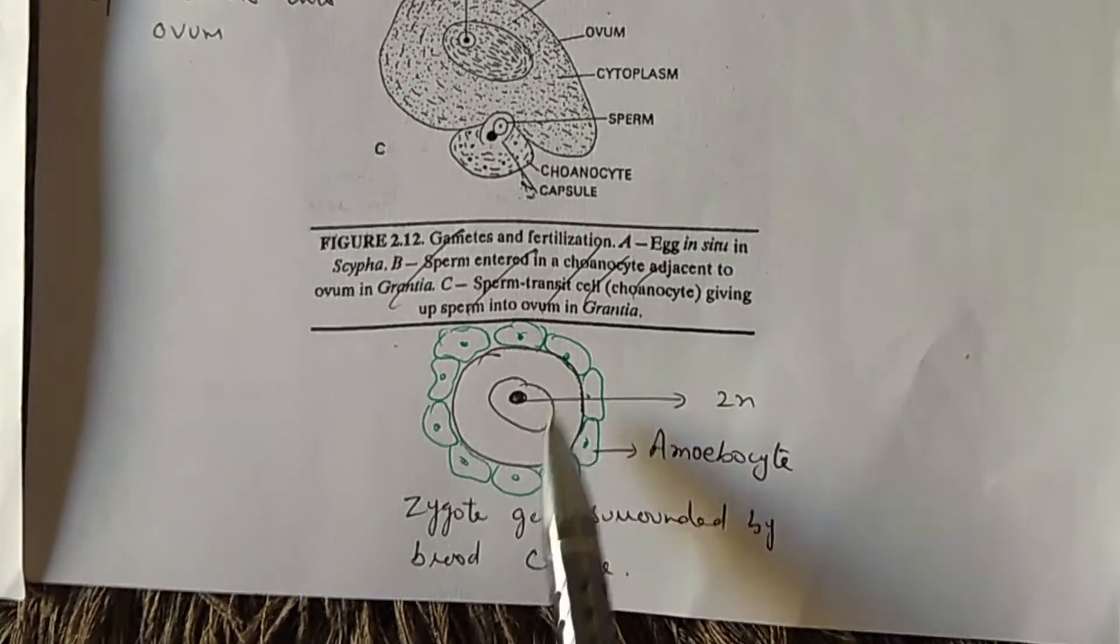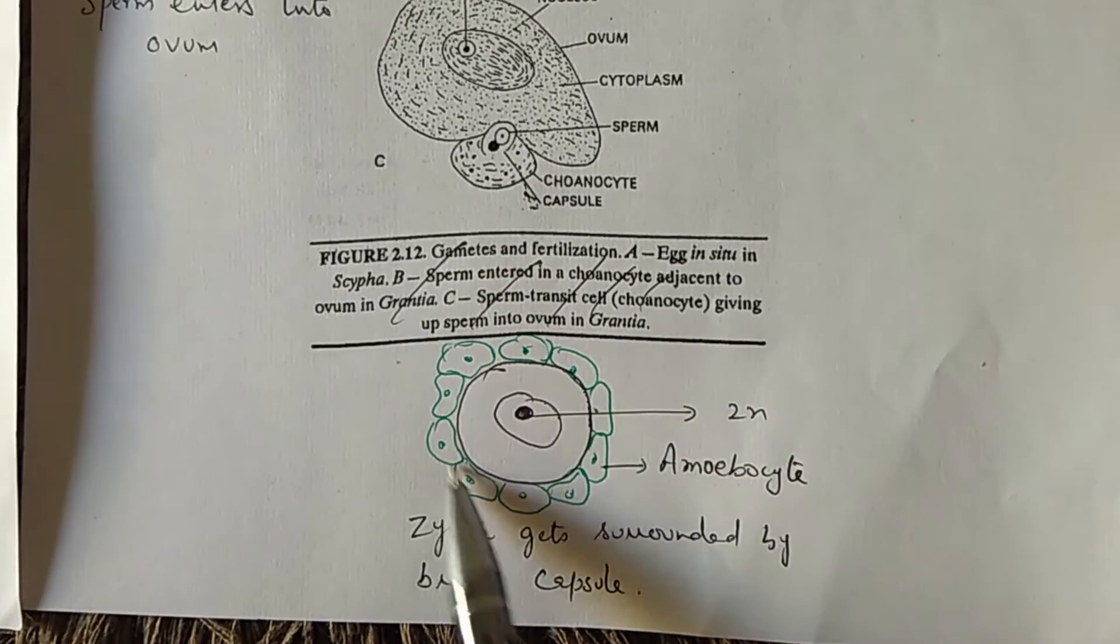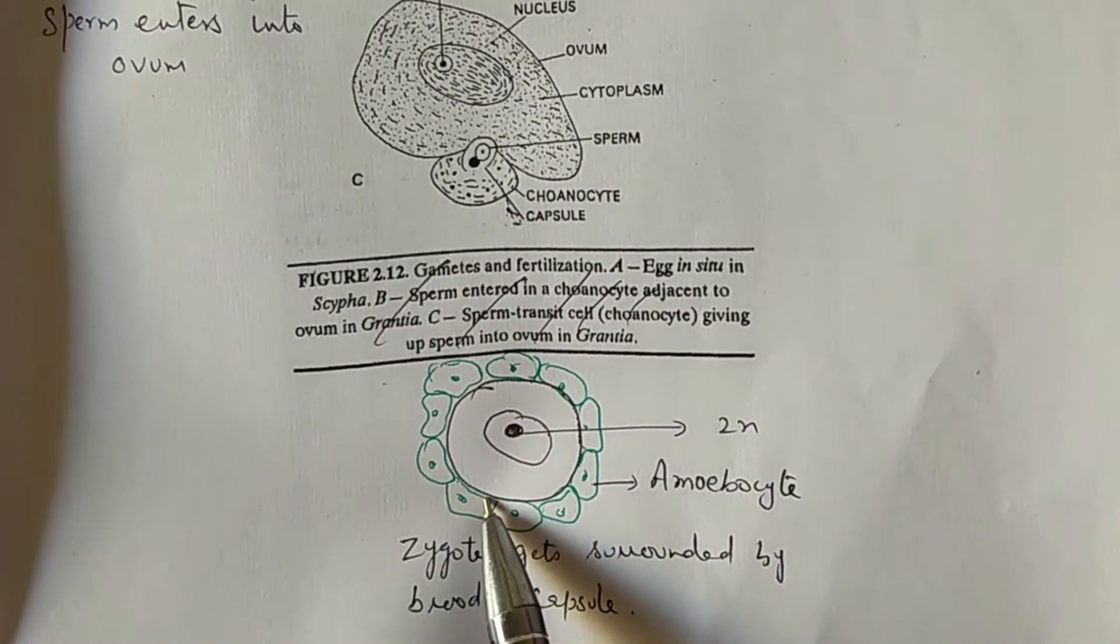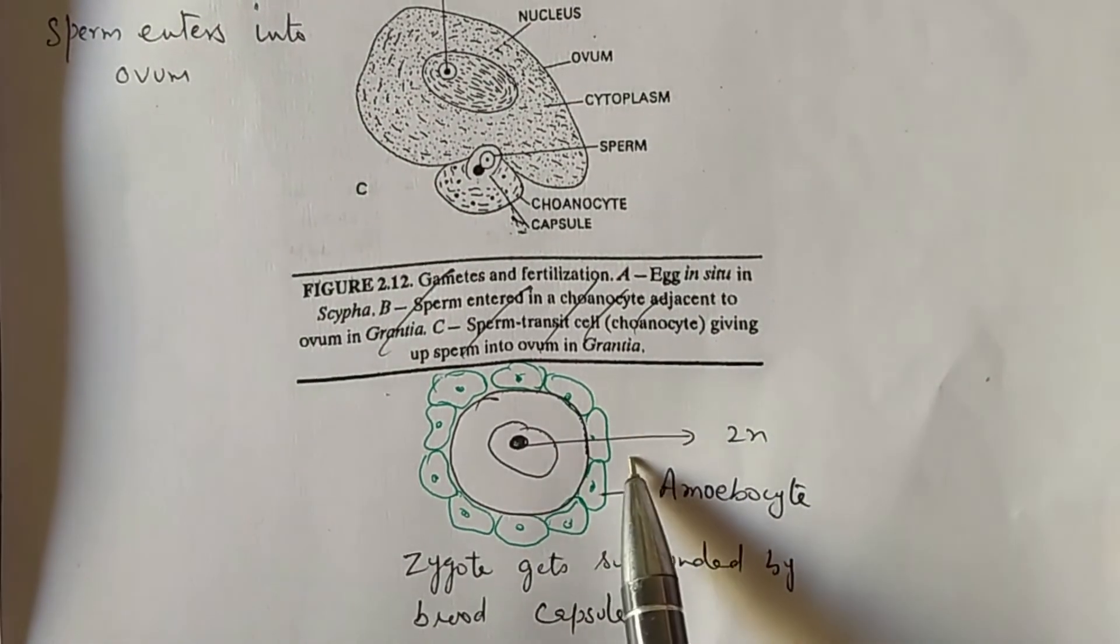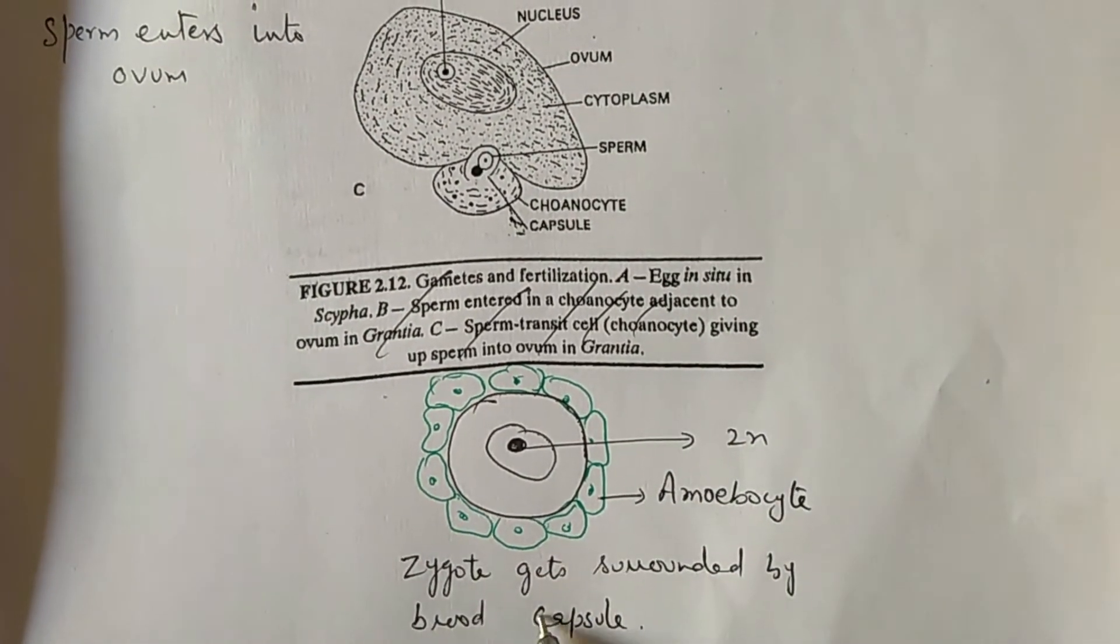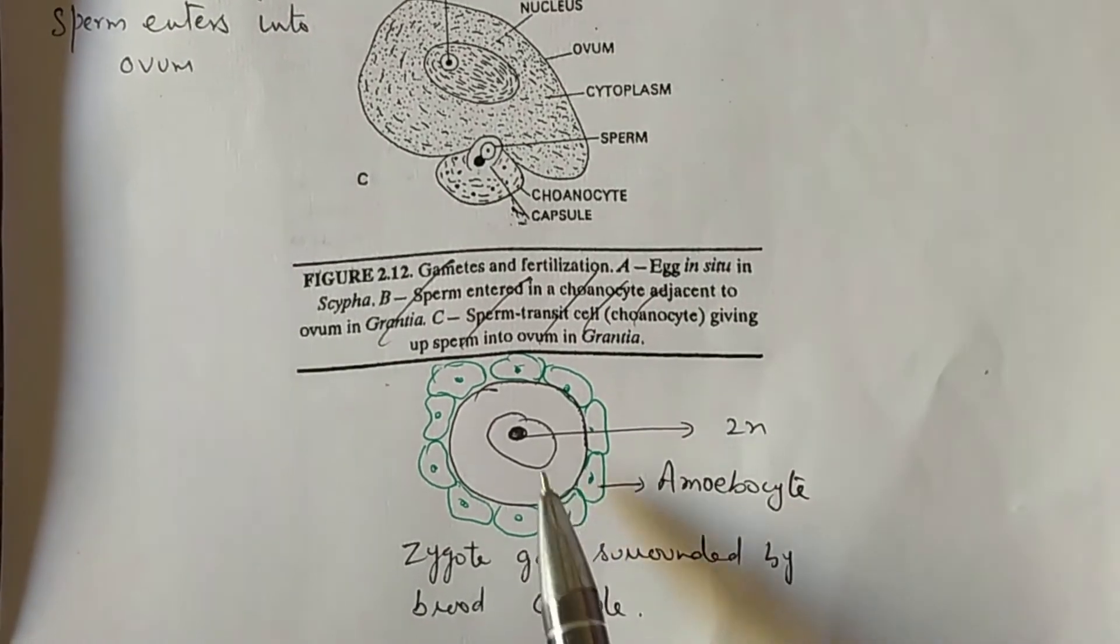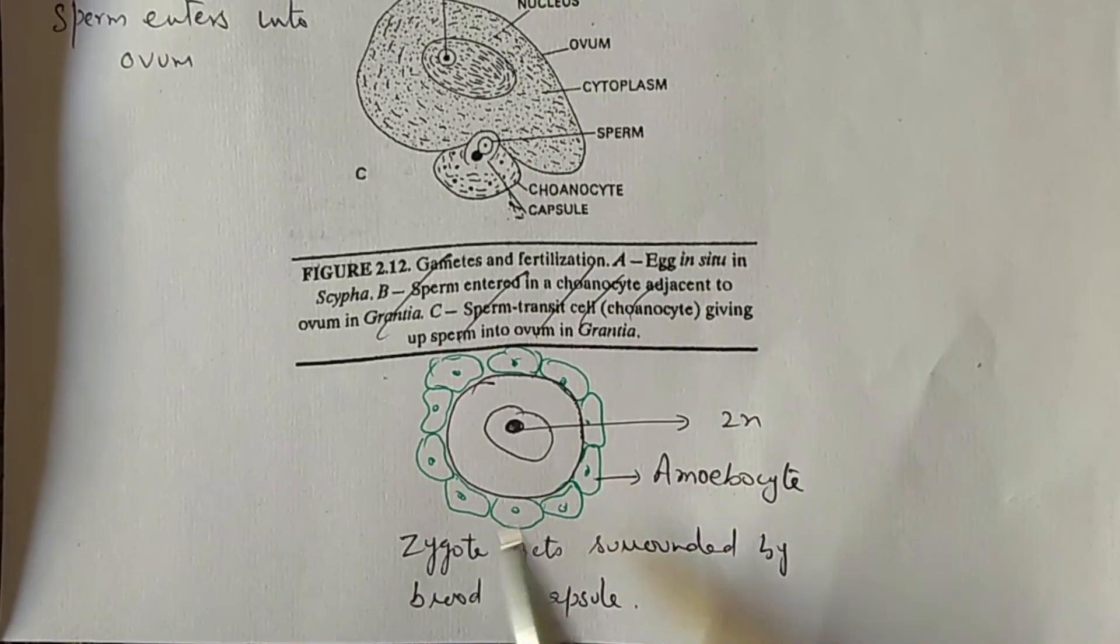The zygote is surrounded by a large number of amoebocytes. This structure is formed in the mesoglia. So the zygote surrounded by amoebocytes forms the complete structure known as the brood capsule. Early development of zygote will occur within the brood capsule.